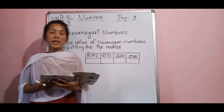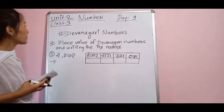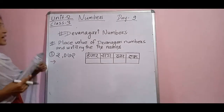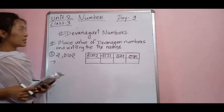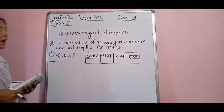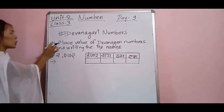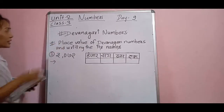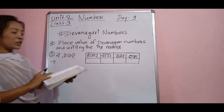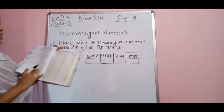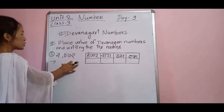Hello, good morning my dear students. Today I am going through Unit 2 of Class 3. The topic that I am going to teach you is Devanagari numbers. Devanagari numbers means you have to write it in Nepali. So the question — look here, I have written the question. Before making you understand about this question, I want to show you the book.